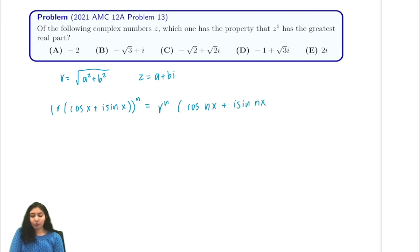This is extremely useful for our problem since we have to calculate all these numbers to the power of 5. So now let's look at each answer choice. For our first answer choice it's pretty easy to just calculate the power 5. It's negative 32 and that's our real part.